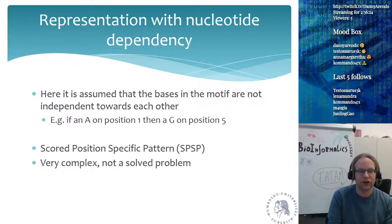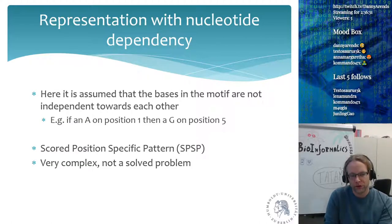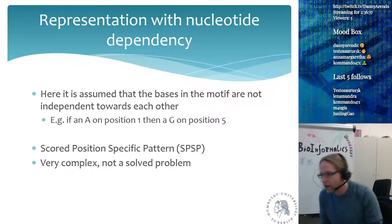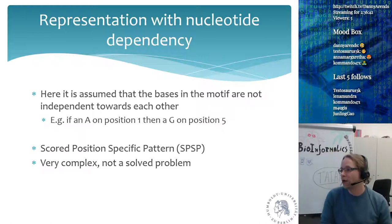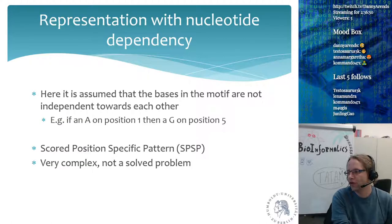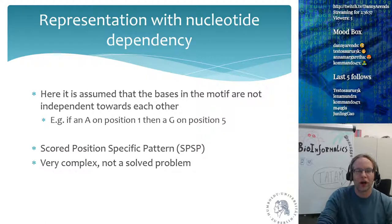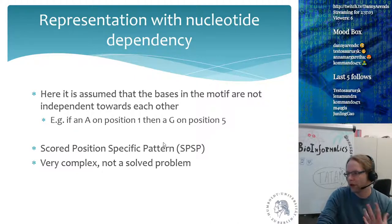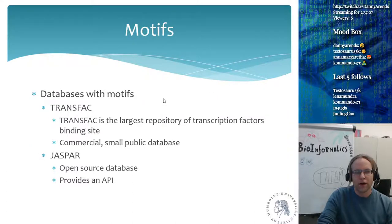Nowadays you have nucleotide dependency relationships where people assume bases in the motif are not independent — for example, if you have an A on position one, you need a G on position five. This uses position-specific scored patterns. It's again very complex, not a solved issue, and something where in the coming ten years someone will figure out the best computer representation — which will be an enormous boost in efficiency for finding protein-DNA binding positions.